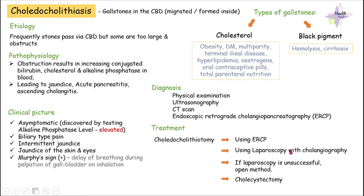If stones are found inside the common bile duct, we insert a tube with an inflatable balloon or a tiny basket to remove them. If the laparoscopic method is unsuccessful, the third method is open choledochotomy — we open the abdomen, find the common bile duct, and remove the stones. Usually after choledochotomy, we also perform a cholecystectomy to remove the gallbladder and prevent any future complications.